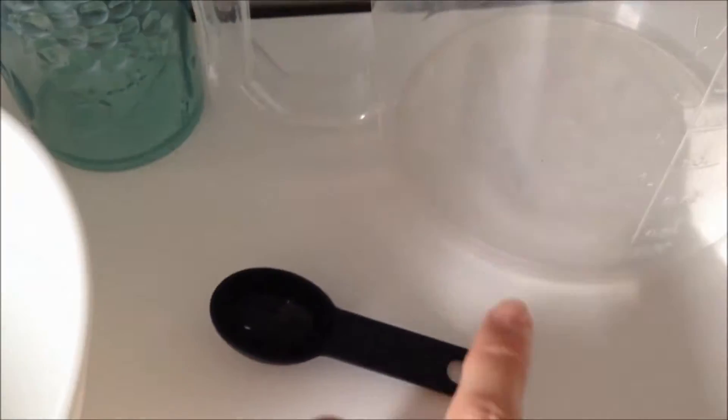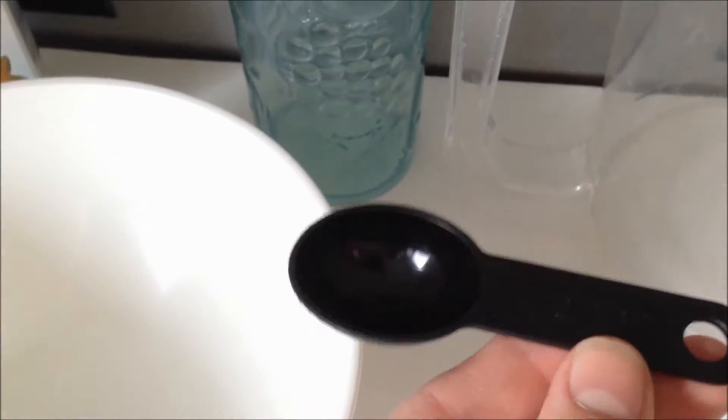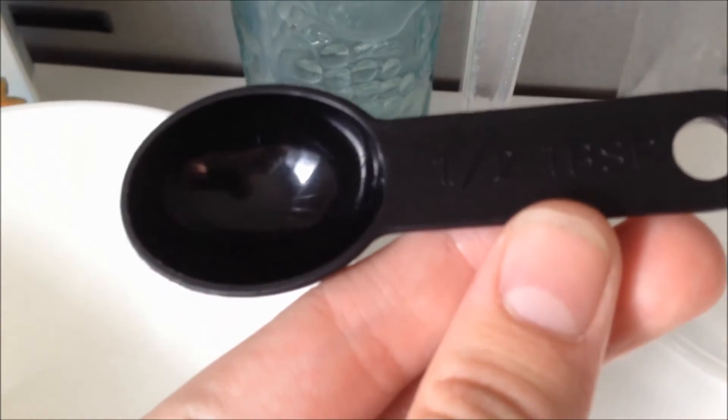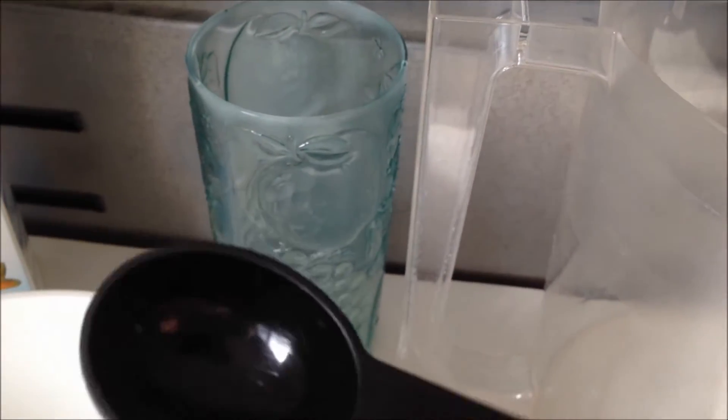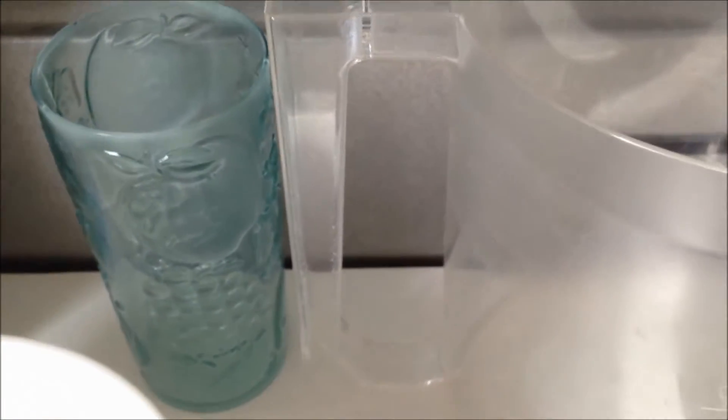If you're really good with measuring you don't need this, but if not, a dry measure. One half tablespoon for salt. I'm going to be filling this up to about eight cups, which is half a gallon. When you're giving your fish salt baths, you want to do one tablespoon of salt to every gallon, so since I'm only doing half a gallon, half a tablespoon.